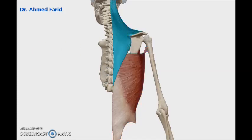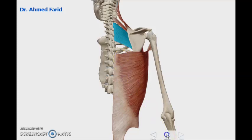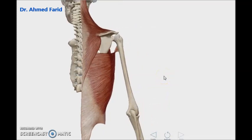The deep layer is deep to trapezius, so I have to hide the trapezius muscle to see the deep layer, which is formed of three muscles: levator scapulae upper, rhomboidus minor in the middle, and lastly rhomboidus major.